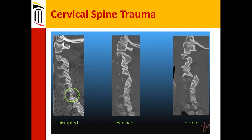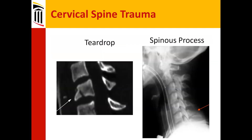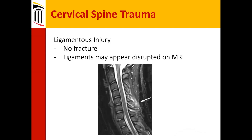These locked facets can be tough to reduce. We try to reduce them closed — that is, putting the head in Gardner-Wells tongs with various weight, tilting the head forward and pulling back up. It's disconcerting; you feel this big chunk. Under ideal situations you try to do it when the patient is awake so they can tell you if they're getting numb or something doesn't feel right. Sometimes that doesn't work and you have to go to the OR to reduce and fuse it. Here's a teardrop fracture — another axial loading and flexion injury. There are also lots of spinous process fractures, so-called clay shoveler's injury, seen with hyperextension type of injury.